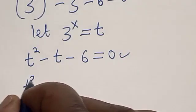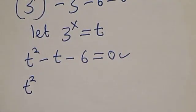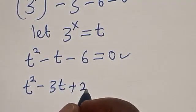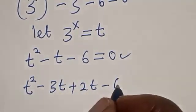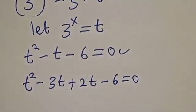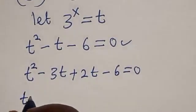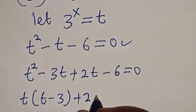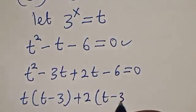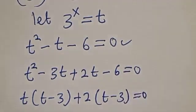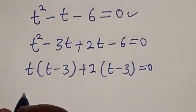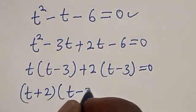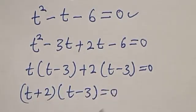t squared minus 3t plus 2t minus 6 is equal to 0. t into (t minus 3) plus 2 into (t minus 3) equals 0. Therefore (t plus 2) multiplied by (t minus 3) is equal to 0.